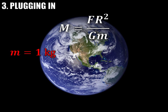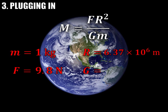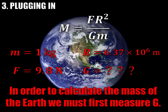We're going to use little m as 1 kilogram — the standard kilogram mass we'll hang from a scale. For r, that's the radius of the Earth, known as 6.37 times 10 to the 6th meters, or about 6 million meters — the distance from the surface to the center of the Earth. F is the weight of a 1 kilogram mass; weight is just mg, so F equals 9.8 newtons. But we need to know G, and unfortunately we never learned what G is yet. So in order to calculate the mass of the Earth, we must first measure G by performing an experiment.